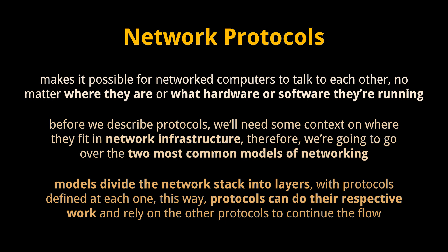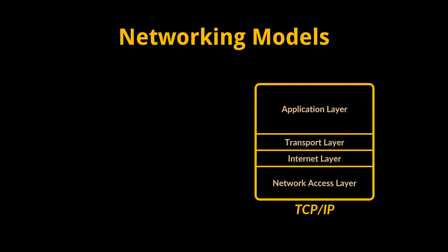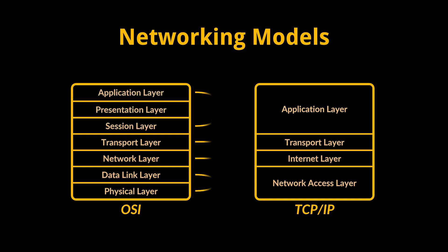First, the TCP/IP model, also known as the Internet Protocol Suite, is one of the oldest networking models and greatly influenced the development of the internet as we know it. This model is defined by four layers and their associated protocols. What you see is the layered representation of this model. Let me know if you'd like us to dive deeper into these in a separate video. The second model is the Open Systems Interconnection model, or OSI model.